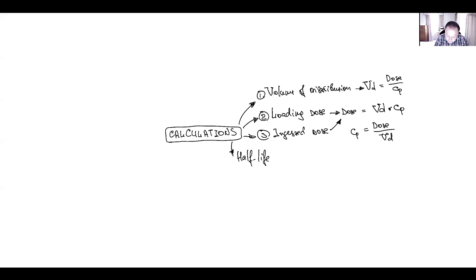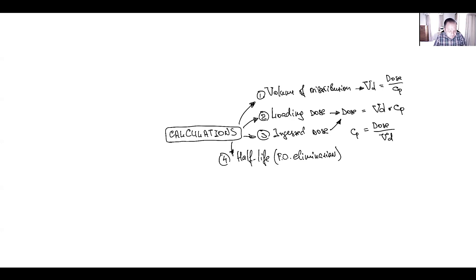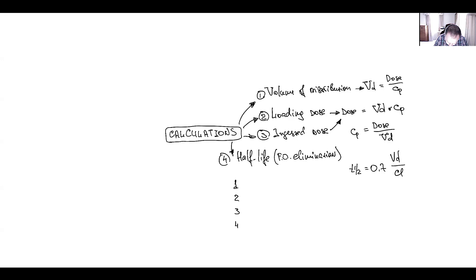After that, you might be asked to calculate half-life. We use the term half-life when talking about first-order elimination. This type of question may ask how long it will take to eliminate a drug, or how long it will take to reach 50% or 75% of steady-state concentration. The equation is: Half-life = 0.7 × Volume of Distribution / Clearance.